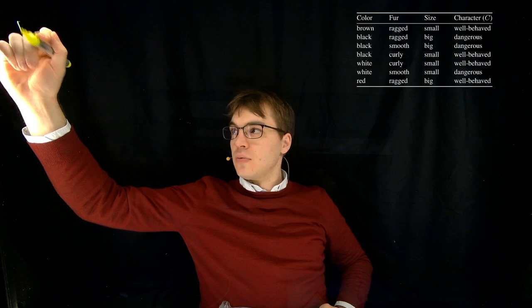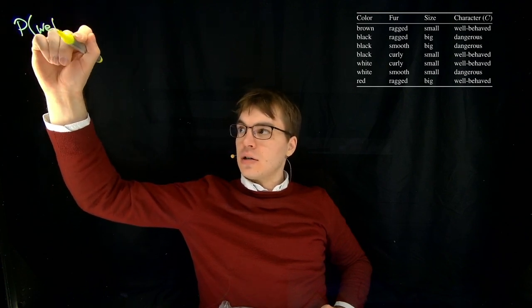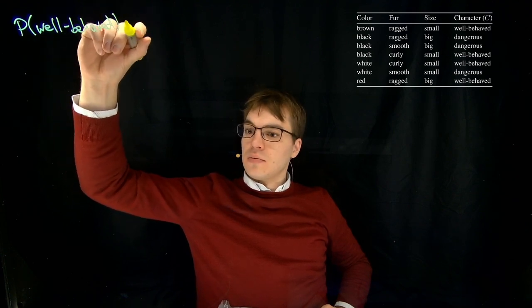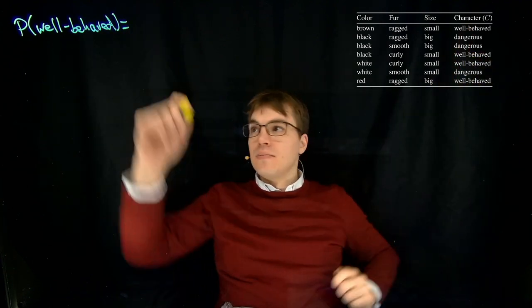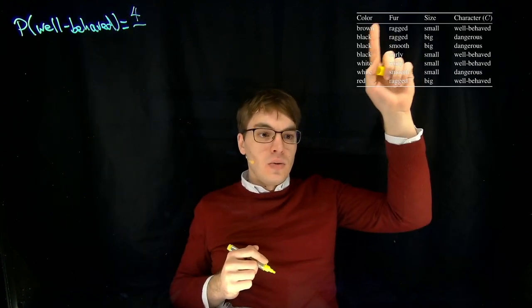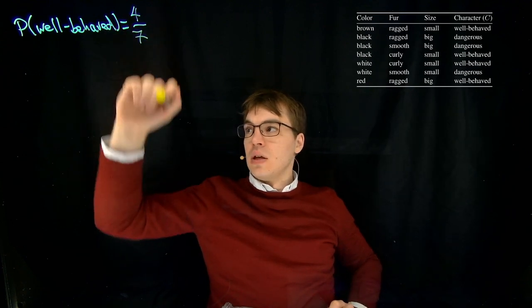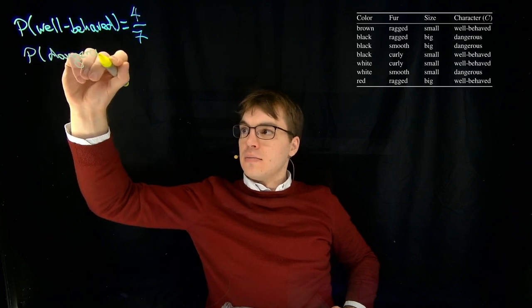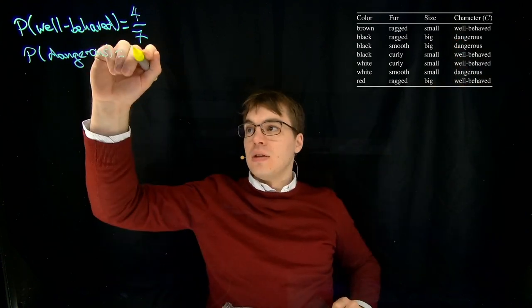The first step is to compute the a priori probabilities. The probability that a dog is well-behaved is 1, 2, 3, 4, divided by 1, 2, 3, 4, 5, 6, 7. And the other way around, that it's dangerous, is 1, 2, 3, divided by 7.